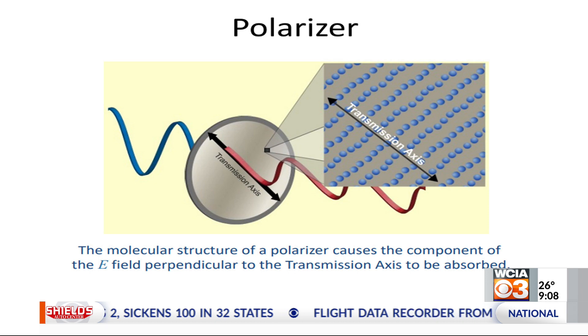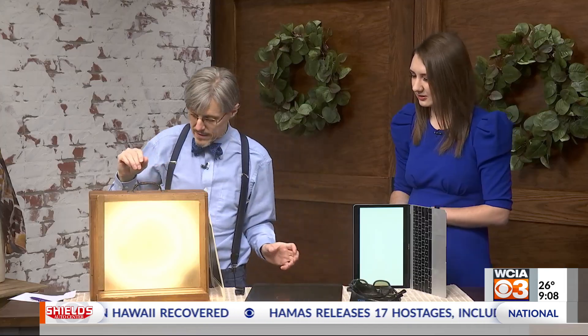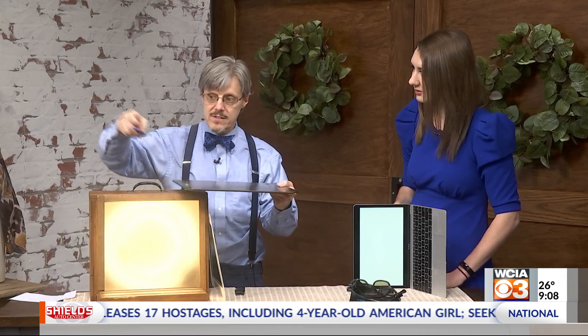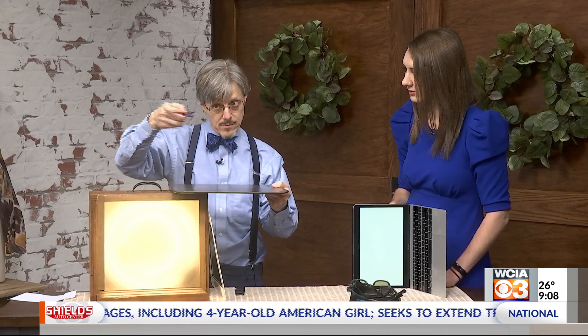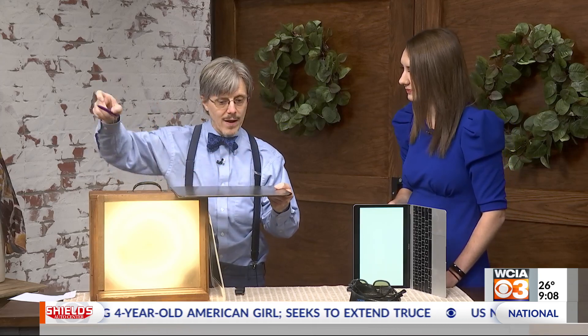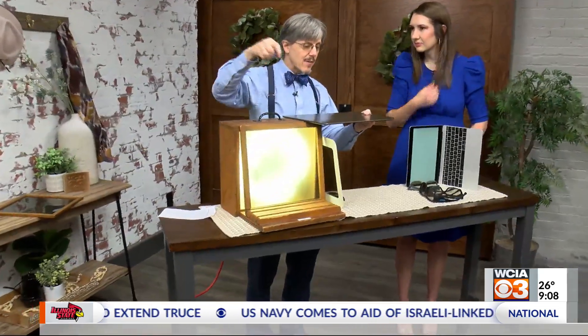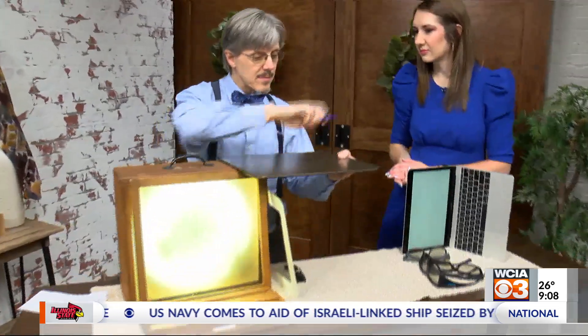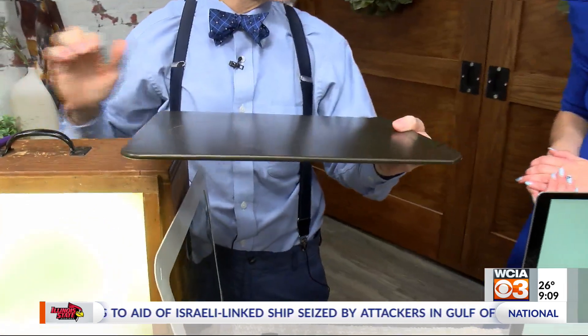This was actually invented by a physicist, Edward Land, back in the early 1930s. He was inventing it because he wanted to deal with glare off the road. So what does polarization have to do with glare? It turns out that if you have a horizontal surface, horizontally polarized light will bounce well off it, while vertically polarized light will not. So glare off a horizontal surface tends to be horizontally polarized, which means you want vertically polarized sunglasses to block it.